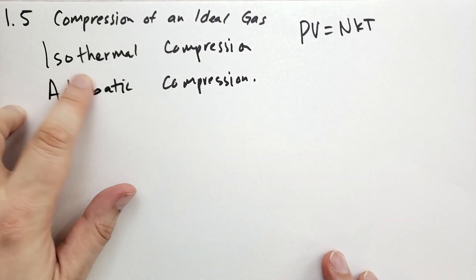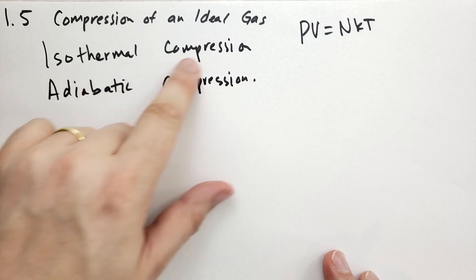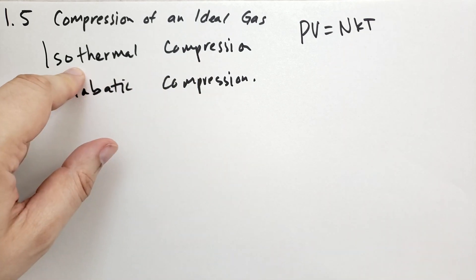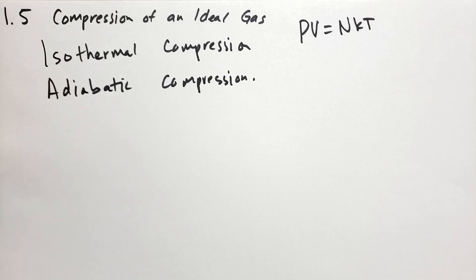Iso means same and thermal means temperature. So this is when you're doing compression and keeping the temperature of the gas constant. Most real compressions will either be isothermal, adiabatic, or really somewhere in between these two.